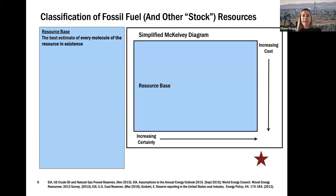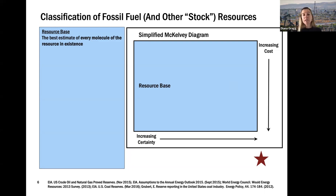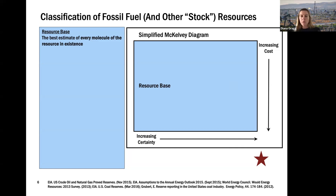I want to talk about how we classify how much of these resources we have. There's something called the McKelvey diagram — a classification of how we talk about depletable stock resources. The biggest level is the resource base: all of the resource in existence on the planet, to our best estimate. We can make really good guesses on how much coal, oil, and natural gas exist on Earth.